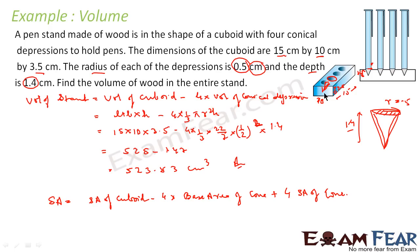To summarize: for volume, we calculated the volume of the cuboid and subtracted the four conical sections. For surface area of the same structure, it is the surface area of the cuboid, minus 4 times the base area of each cone, plus the curved surface area of each cone — the extra area we gain.